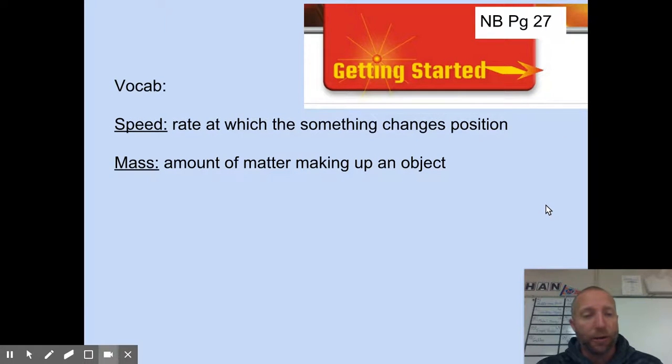And we have two big vocabulary words to worry about here. The first one is speed. Speed is the rate at which something changes position. And the second vocab word is mass. And the mass is the amount of matter making up an object. So speed and mass, we're going to want to put those in our notebooks.